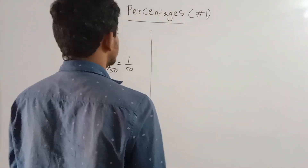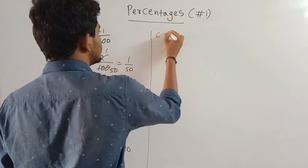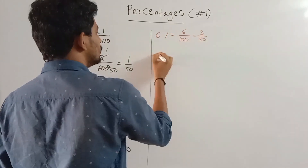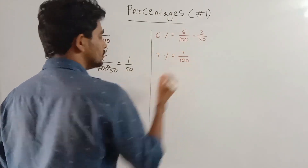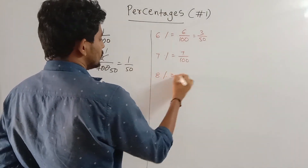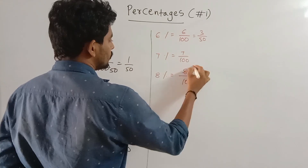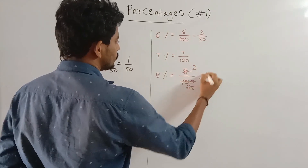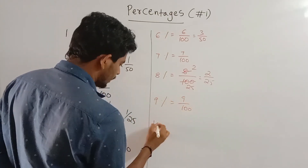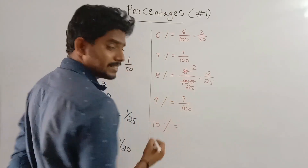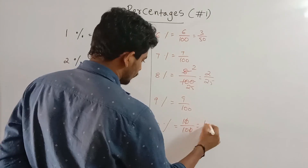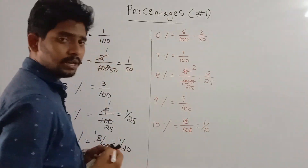Six percentage is 6 by 100, which simplifies to 3 by 50. Seven percentage is 7 by 100; since 7 is a prime number, we cannot simplify it further. Eight percentage is 8 by 100, which simplifies to 2 by 25. Nine percentage is 9 by 100. Ten percentage is 10 by 100, which equals 1 by 10.